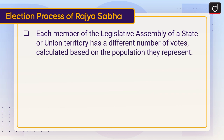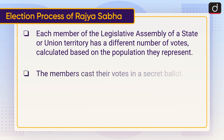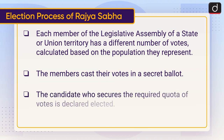calculated based on the population they represent. The members cast their votes in a secret ballot. The candidate who secures the required quota of votes is declared elected.